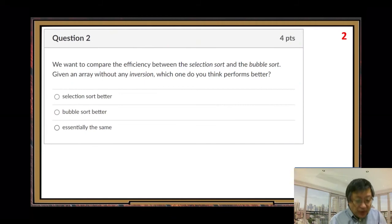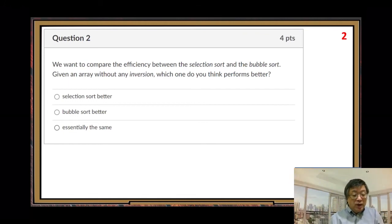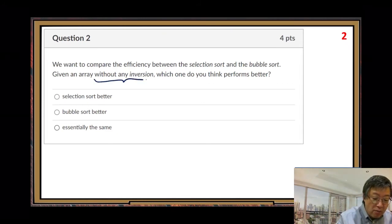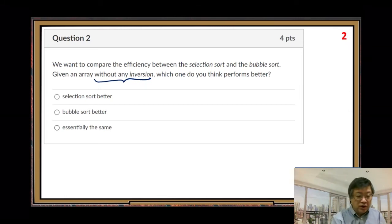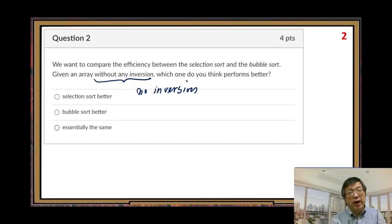Now the second question. This one we compare selection sort and bubble sort. I assume you know the details — how to do selection sort, how to do bubble sort. We want to compare the efficiency between selection sort and bubble sort given an array without any inversion. This is the main condition. I hope you do not skip this condition: no inversion in the given input array. I hope you know the meaning of inversion.